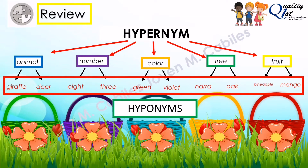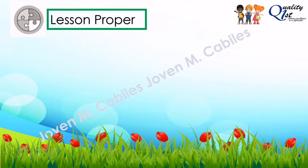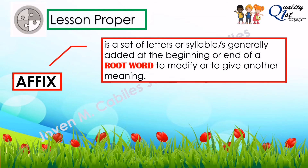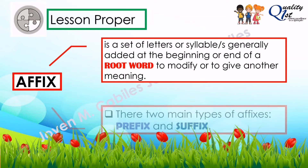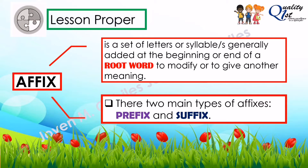Now let's move on to our main lesson today. You're going to learn about affixes. An affix is a set of letters or syllable or syllables generally added at the beginning or end of a root word to modify or to give another meaning. There are two main types of affixes: the first one is prefix and the second is suffix.